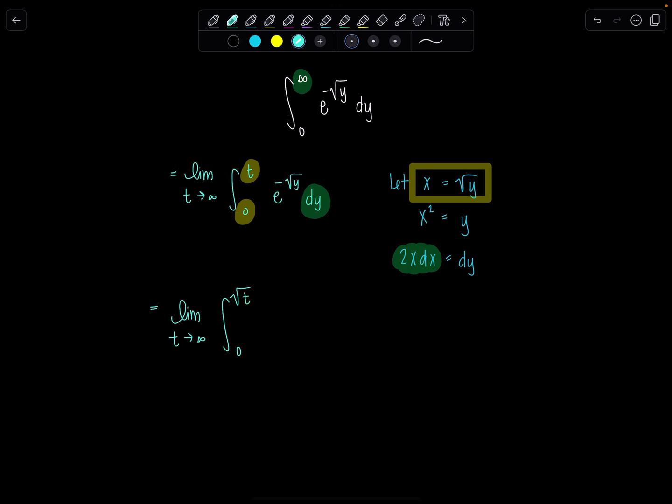Instead of e to the negative square root of y, we have e to the negative x. And then dy gets replaced with 2x dx. How are we doing?